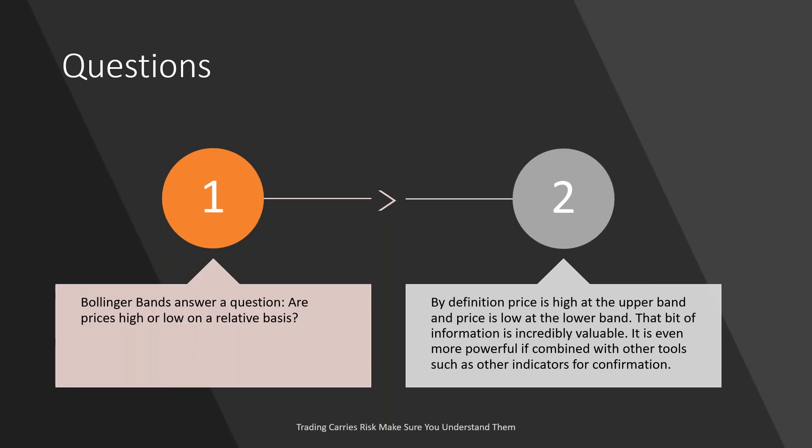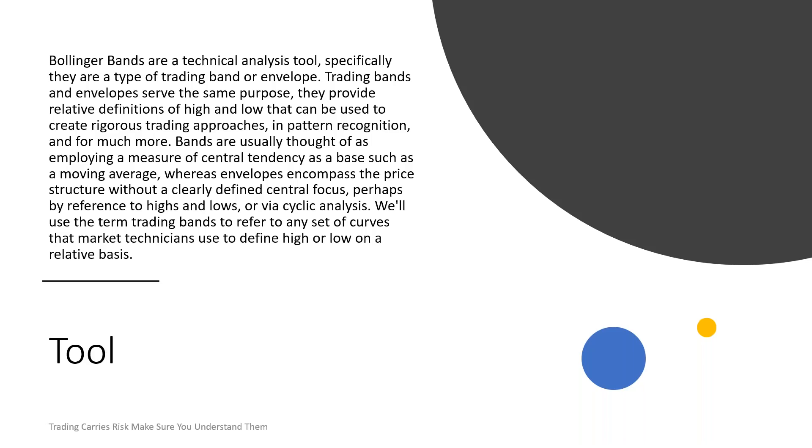Bollinger Bands answers one important question: are prices high or low on a relative basis? Based on what John Bollinger developed, prices are high near the upper band and prices are low near the lower band. That bit of information is incredibly valuable and even more powerful if combined with other tools, such as other indicators for confirmation.